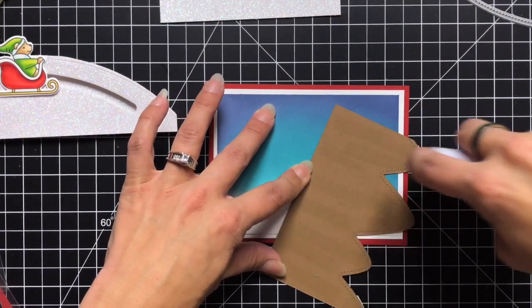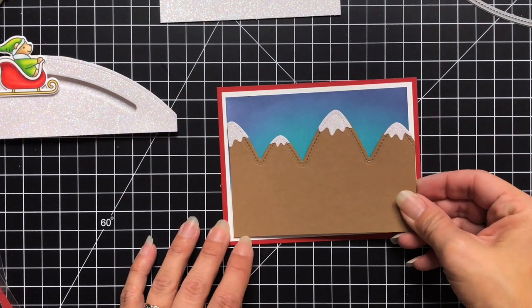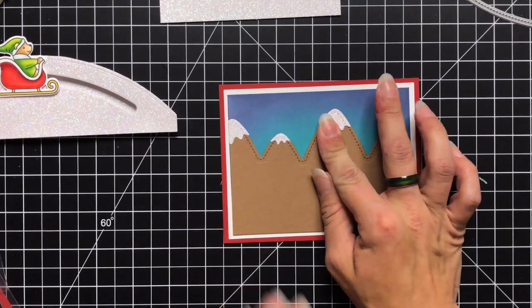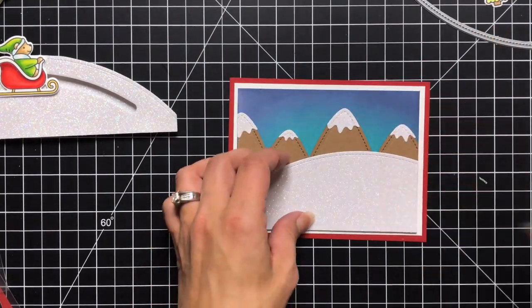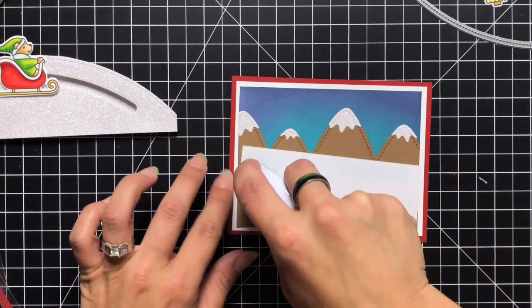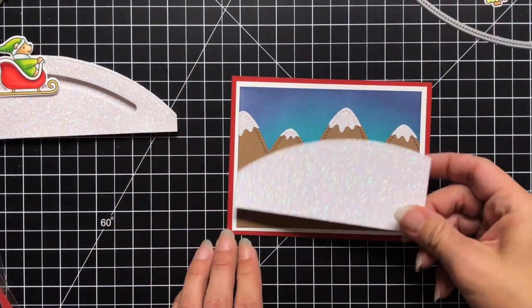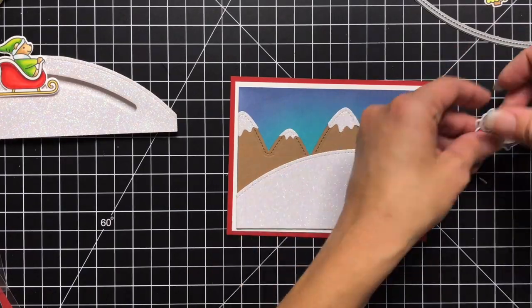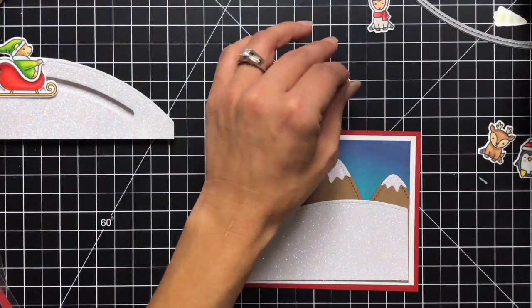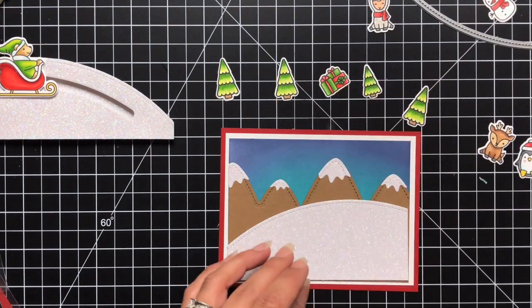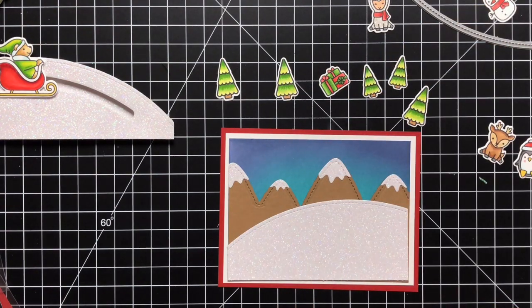I know when I saw this stamp set the Oh What Fun stamp set the first thing I thought of was a slider and I actually just haven't made a slider in a long time. So I thought these two worked really well together and came out super cute. And using the Pixie Dust glitter cardstock was such a nice touch to it because snow is always sparkly to me. So I really like how that adds to the card.